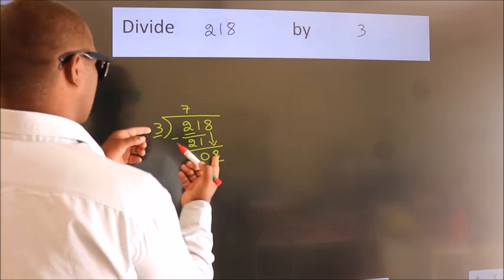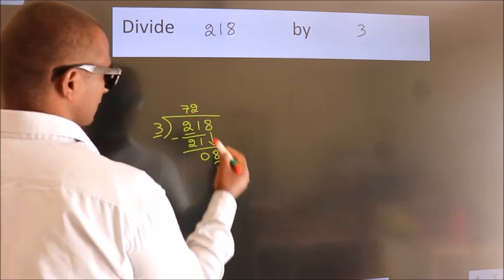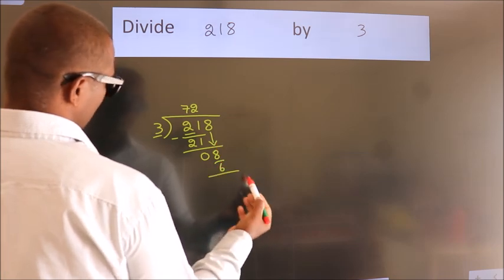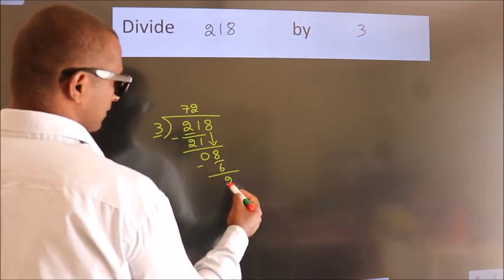Close to 8 in 3 table is 3 2's 6. Now we subtract. We get 2.